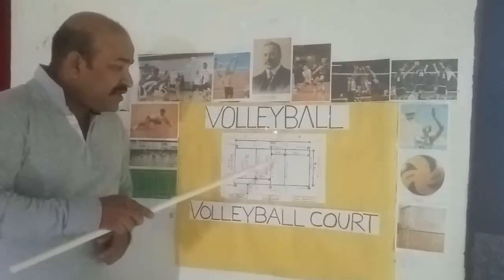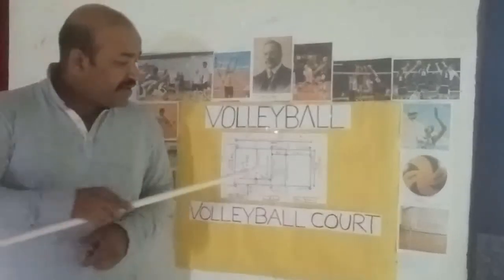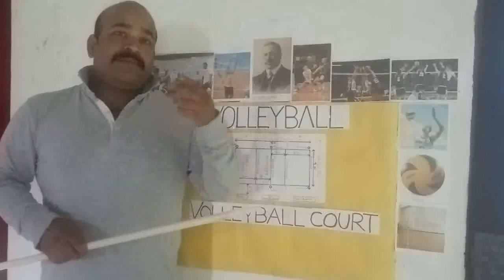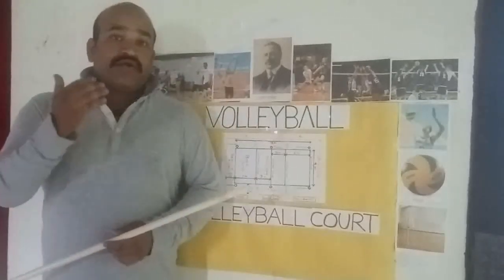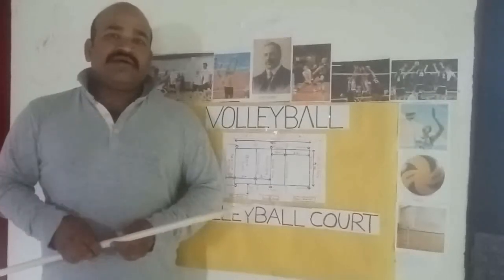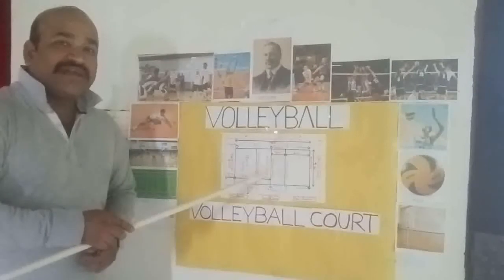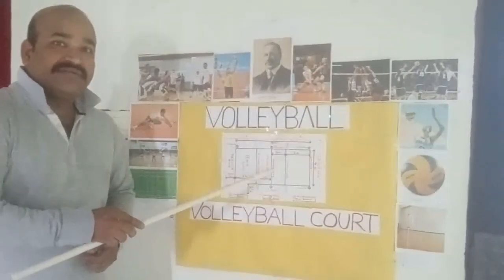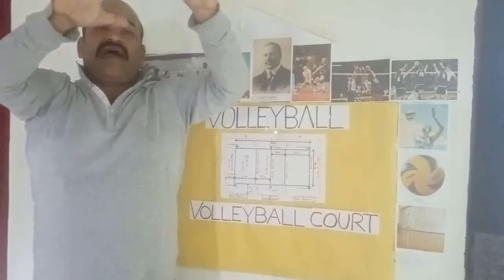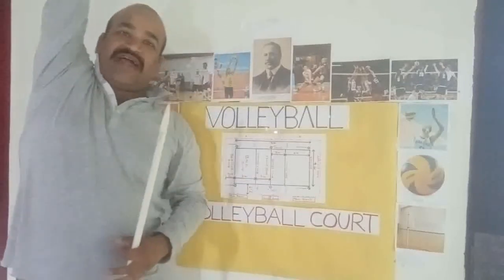Block. One of the six basic skills. A defensive play by one or more front row players meant to intercept a spiked ball. The combination of one, two, or three players jumping in front of the opposing spiker and contacting the spiked ball with their hands at the net. The blocker stands with both hands up, fingers spread to the outside, with arms extended in front of the net.